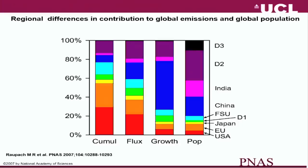That global picture hides huge regional variation. This slide brings together cumulative emissions since the Industrial Revolution since 1750, emissions in 2004, and growth in emissions from 2000 to 2004, alongside population. It's split into four big emitters — USA, Japan, China, and India — and groups of countries including the former Soviet Union, the EU, and other developed and developing nations.